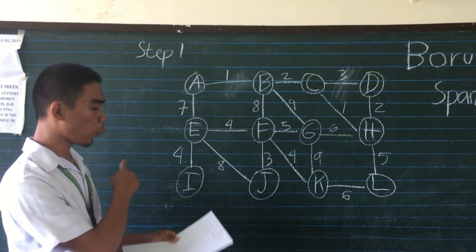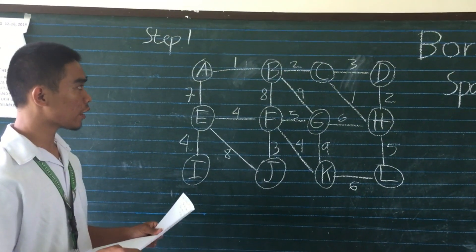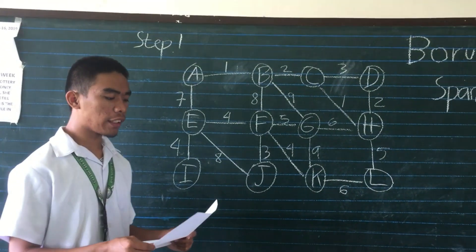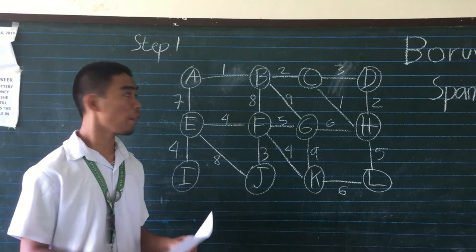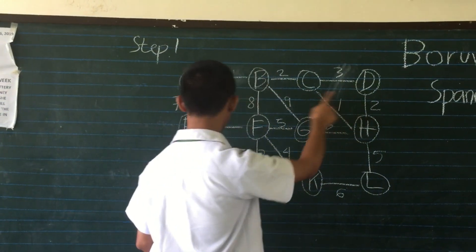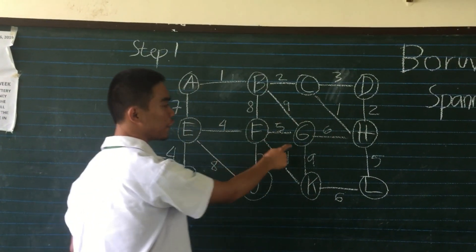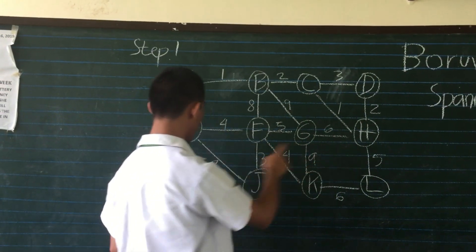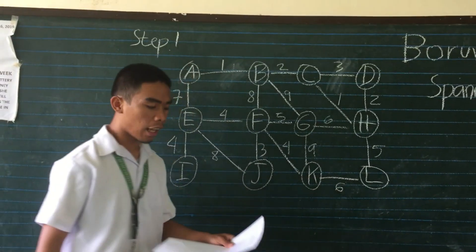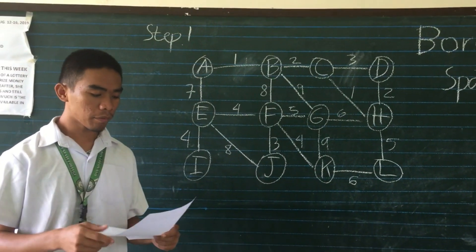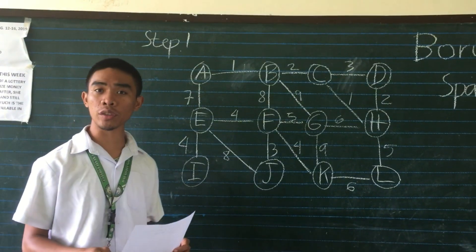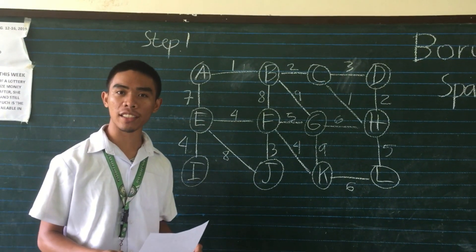Step 1: Write up a list of components. For this graph, we have A, B, C, D, E, F, G, H, I, J, K, L. This is optional but helps you to keep track.